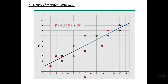The fourth part is to draw the regression line. The regression line has a slope of 0.57 and a y-intercept of 1.07. To verify the slope from the graph, we take any two points on the regression line, compute the variation in y values, and divide by the variation in x — giving 0.57. The value 1.07 is simply the intercept between the regression line and the y-axis.